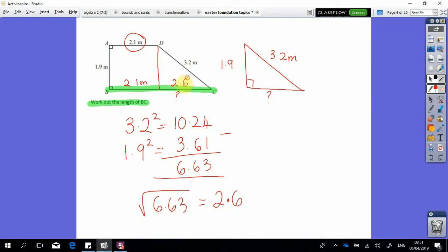We know that this bit is 2.6 meters, but we haven't finished. You've got to answer the actual question. We have got to work out the length of BC. We know that the first bit is 2.1 meters.